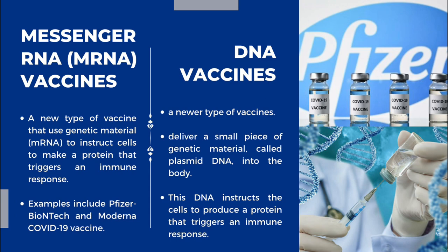Moving to the latest vaccines — mRNA vaccines and DNA vaccines. mRNA is a new type of vaccine that uses genetic material to instruct cells to make a protein that triggers an immune response. Examples include the Pfizer-BioNTech and Moderna COVID-19 vaccines.